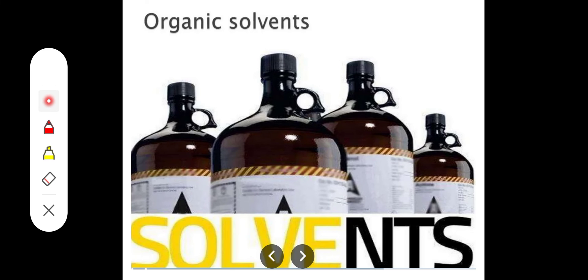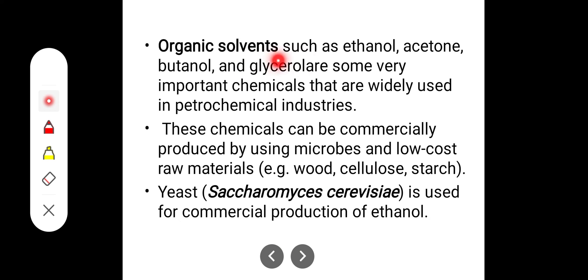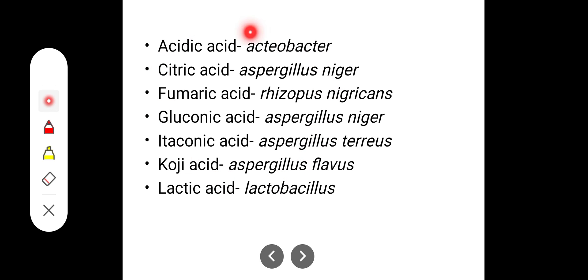Organic solvents such as ethanol, acetone, butanol, and glycerol are widely used in petrochemical industries and can be commercially produced using microorganisms and low-cost raw materials like wood cellulose and starch. For example, Saccharomyces cerevisiae is used for commercial production of ethanol. Other examples: Acetobacter for acetic acid, Aspergillus niger for citric acid, Rhizopus nigricans for fumaric acid, and Lactobacillus for lactic acid.